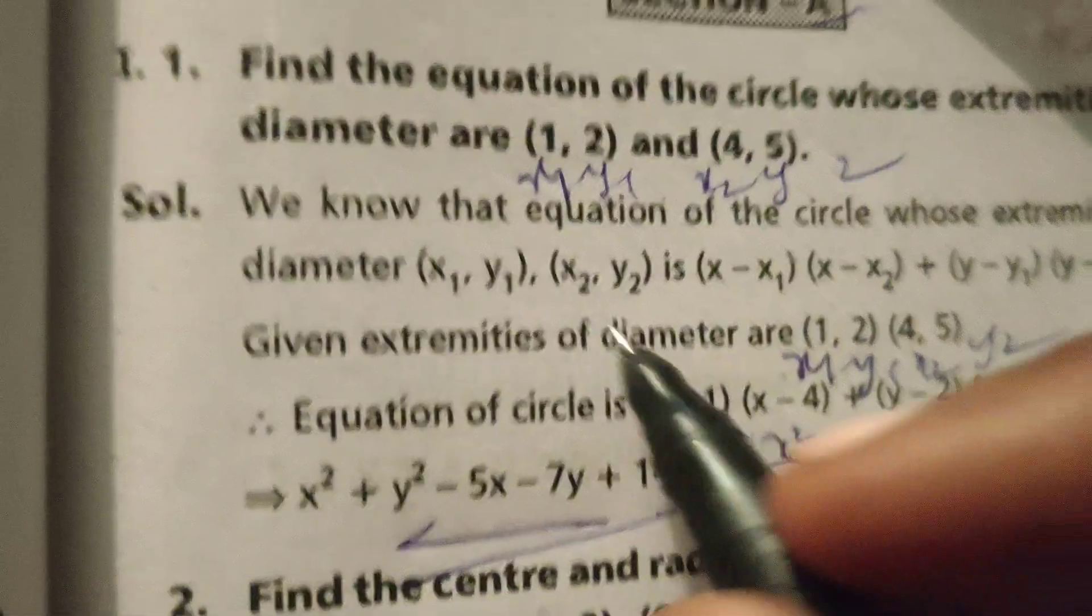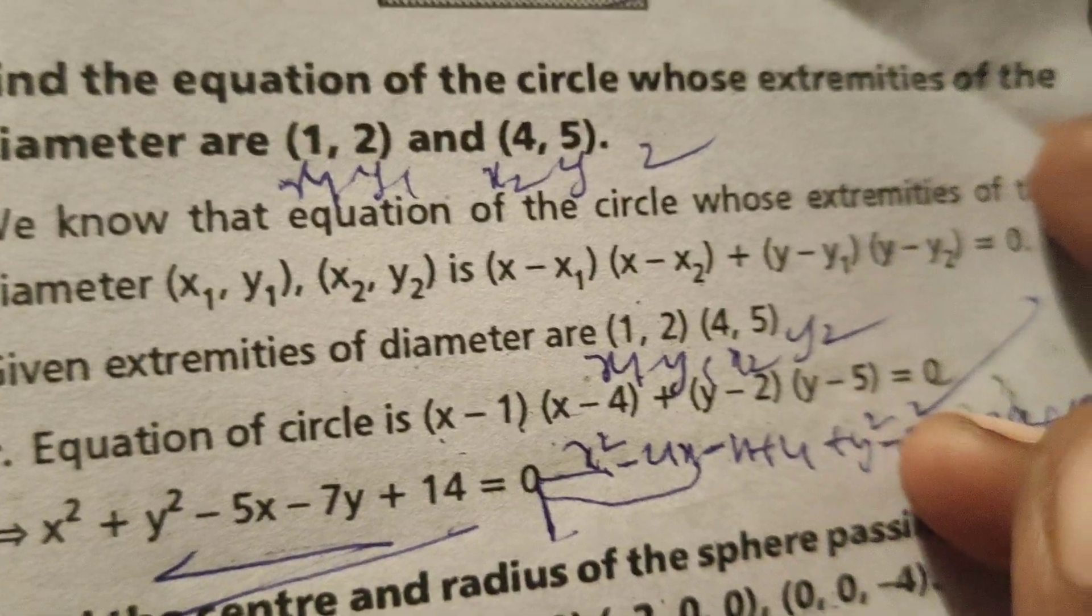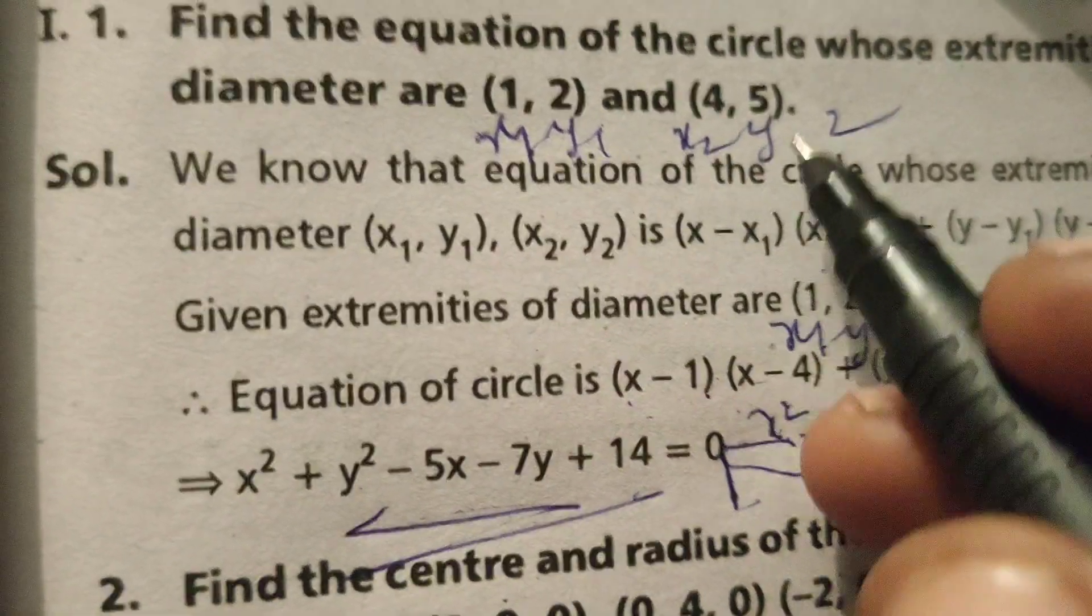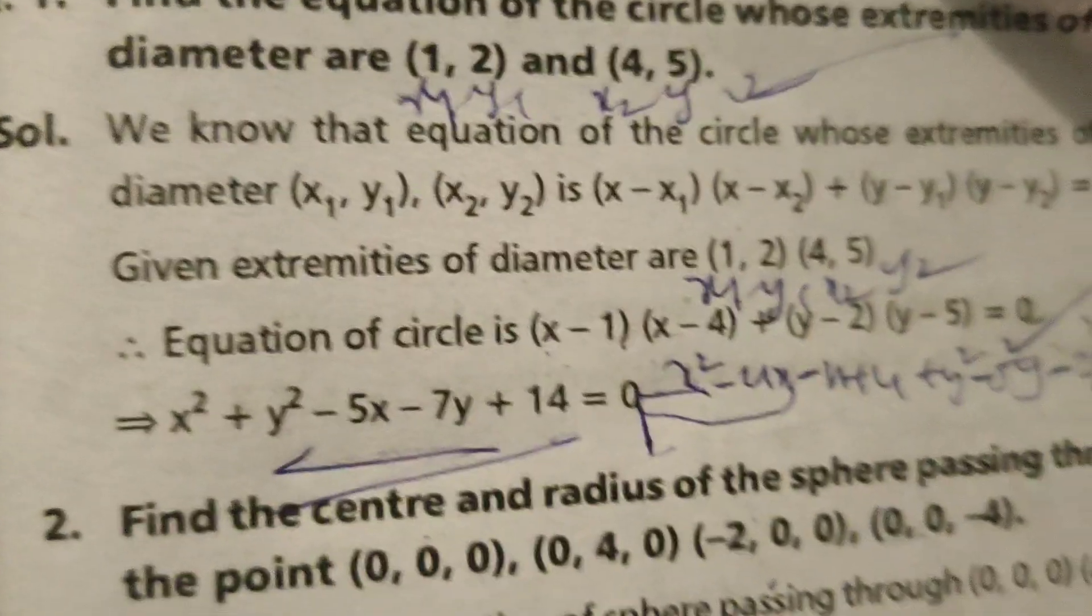This is the solution for the equation of the circle whose extremities of the diameter are (1,2) and (4,5). Okay, thanks.